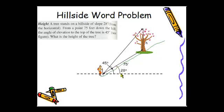If we look at this angle of elevation and this angle of elevation, the 45 is the sum of those two angles. So we can get the missing angle here by subtracting 28 from 45. We get 17 degrees.